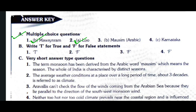Question number three: The word 'monsoon' has been derived from the word — options are Mausumi (Arabic) meaning season, Malayalam, and option D both A and B. The answer is option D. Question number four: Mango showers are experienced in which state — Kerala, Assam, Karnataka, or Uttar Pradesh. The answer is option C, Karnataka.